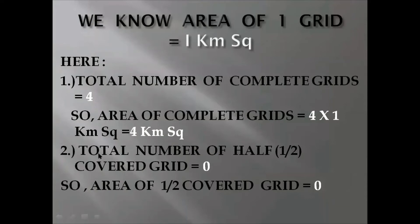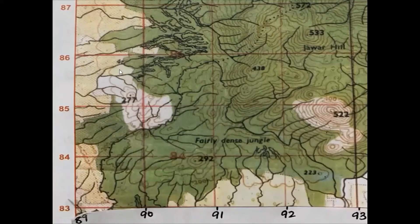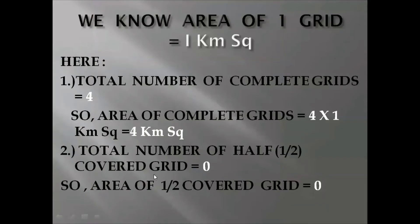Second I will count the total number of half covered grid. You will see that in this map there is not even a single half covered grid. If you will see this one then you will see that this is less than half. So I have written 0 here and thus the area of half covered grid is 0.